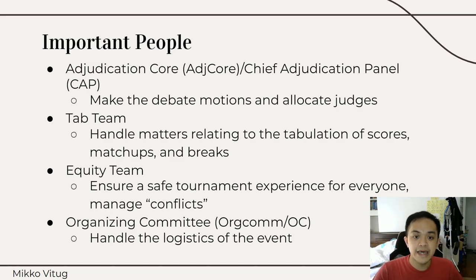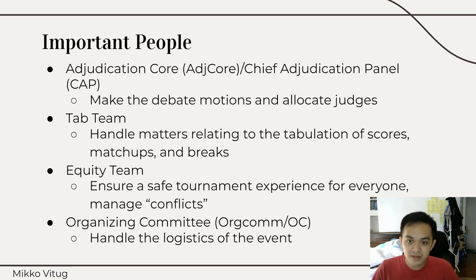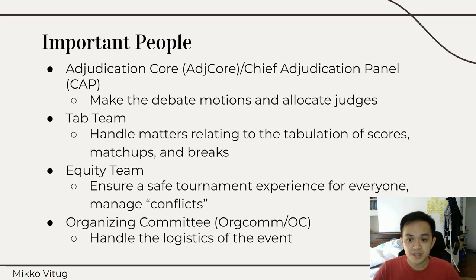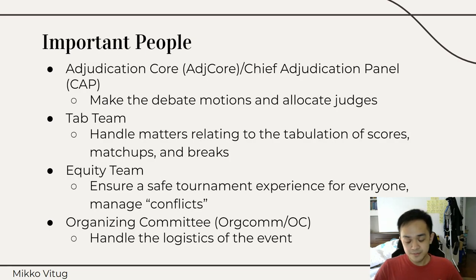The second group is the tab team. They handle all matters relating to the tabulation of scores, matchups, and breaks. There's a debate platform known as TabbyCat, which is almost what everyone uses. It's where you have all the scores and results for each round, who you're going to go against, etc. It's a platform that needs to be managed by the tab team during the course of the tournament. So if you check this platform and see a discrepancy between your score and what the judge told you — for example, you were told you won but the tab platform says you lost — you'd want to approach the tab team.